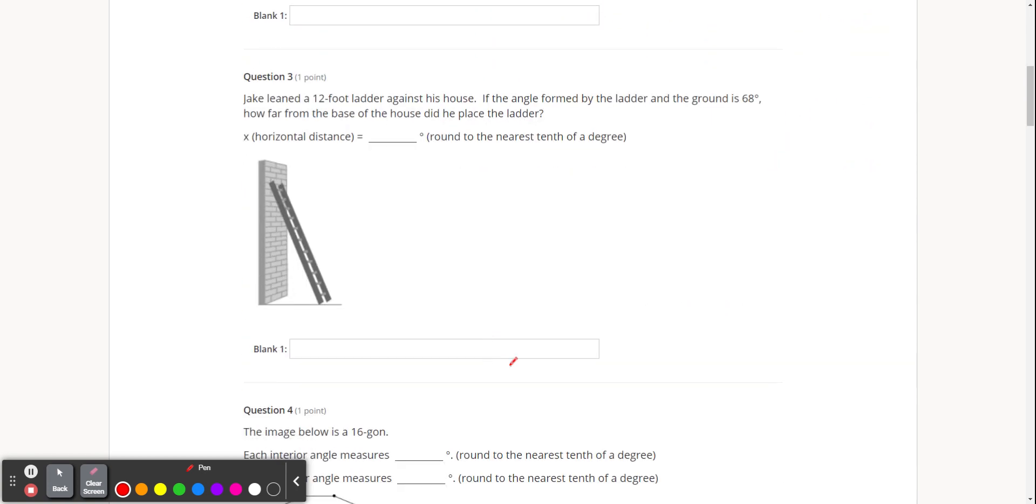Question number three. Do we need to talk about that one? Yeah, absolutely. So the word problems are kind of a struggle sometimes. Jake leans a 12-foot ladder against the house. The ladder is 12 feet. The angle formed by the ladder and the ground—so where does the ladder and the ground come together? That's this angle right here. That's 68 degrees. How far from the base of the house is the ladder? So the base of the house is down here. I'm looking for this distance.